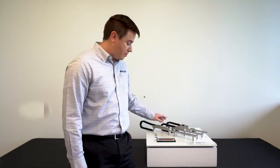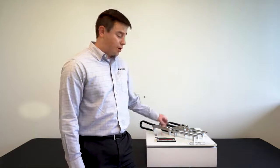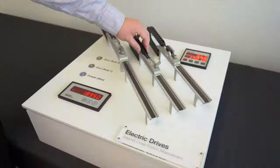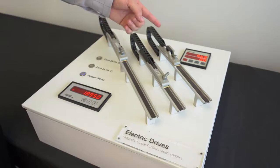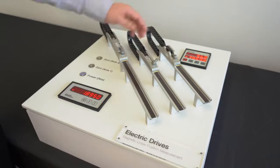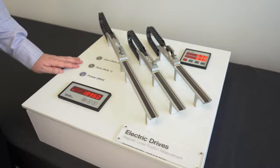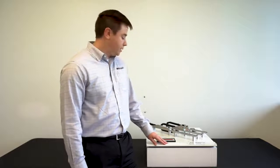One thing about the incremental ones is when power is cycled, they do need to be homed. So as you can see here, if the sensor is out here and power gets cycled, it'll go to zero. You have to put it back to where you need it to be to home it.